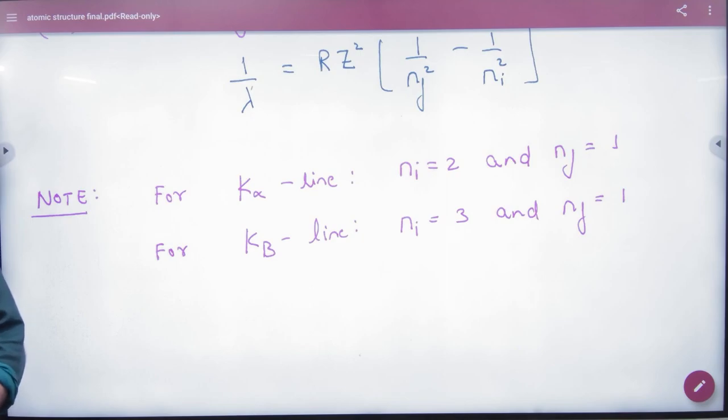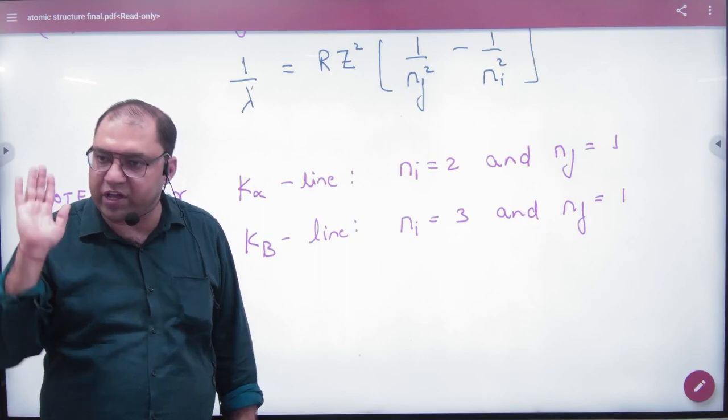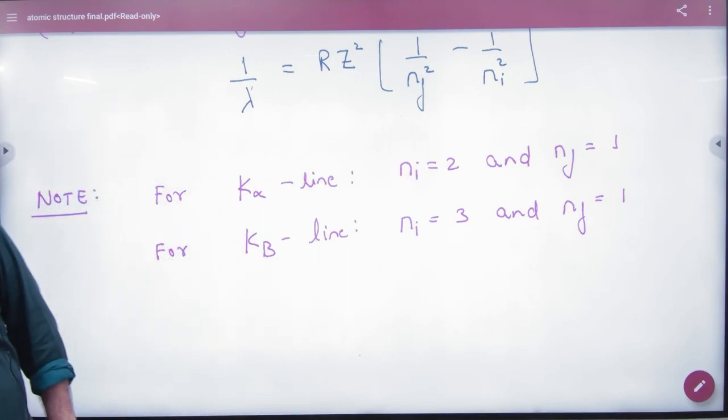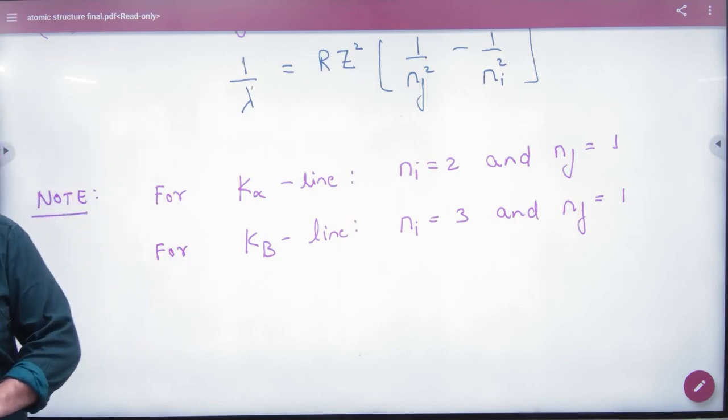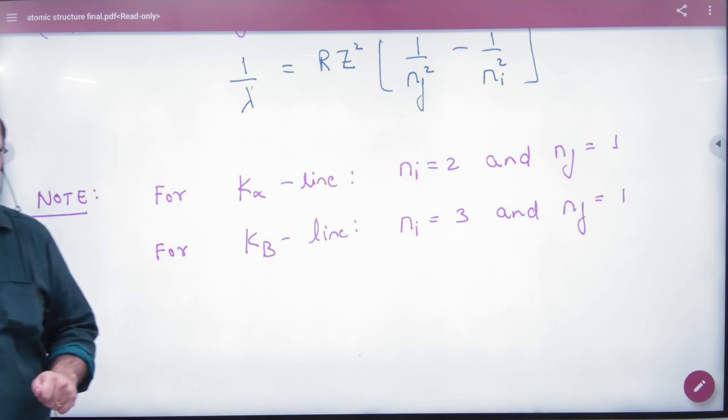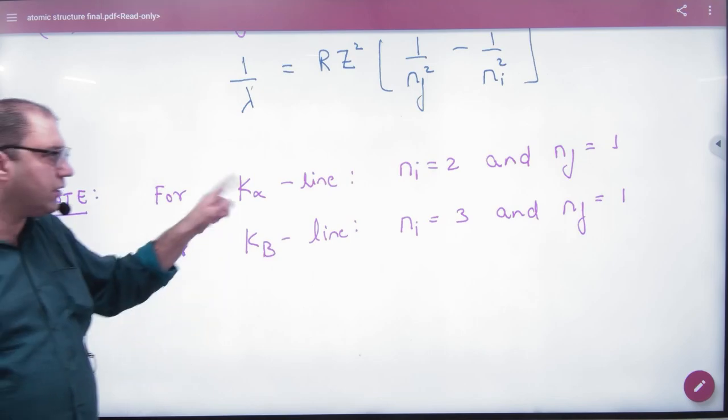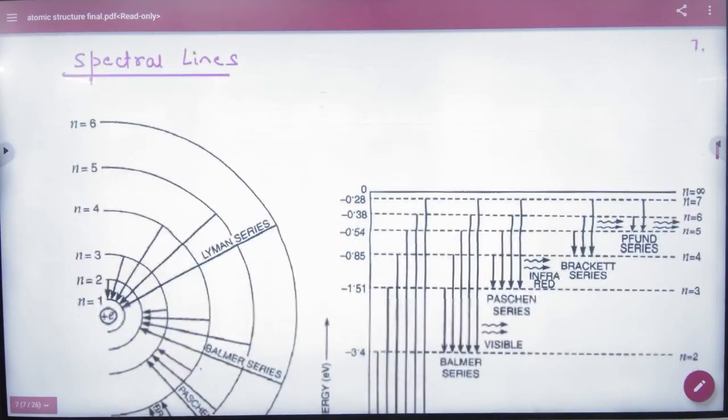K-alpha line by default is the transition from n=2 to n=1. K-beta line is the transition from n=3 to n=1. We will also study these transitions, but if it comes to numerical problems, it should be 2 to 1 and 3 to 1.